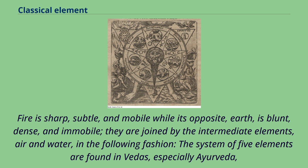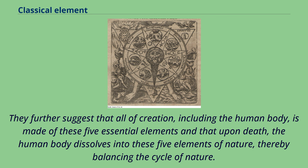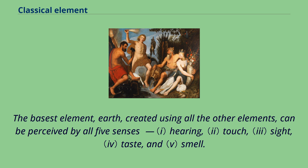The system of five elements is found in the Vedas, especially Ayurveda. The Panchamahabhuta, or five great elements, of Hinduism are: Prithvi or earth, Ap or Jala (water), Agni or Tejas (fire), Vayu (air), and Akasha (void or space). They further suggest that all of creation, including the human body, is made of these five essential elements, and that upon death the human body dissolves into these five elements of nature, thereby balancing the cycle of nature. The five elements are associated with the five senses and act as the gross medium for the experience of sensations. The basest element, earth, created using all the other elements, can be perceived by all five senses: hearing, touch, sight, taste, and smell.